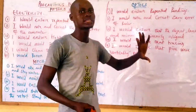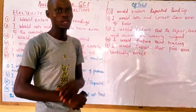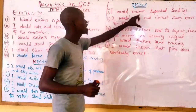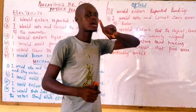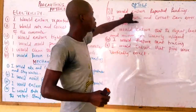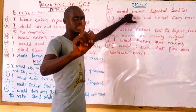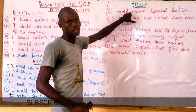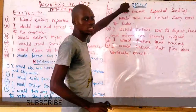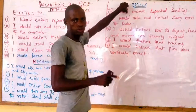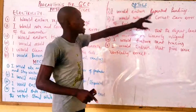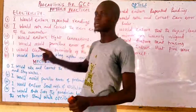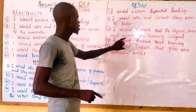Now for optics — the first precaution is: I would ensure repeated readings. But remember, only write this precaution if you are taking two different readings. If you are only taking one single reading, avoid this precaution, because if you write it incorrectly marks will be deducted. The second precaution is: I would note and correct the zero error of the ruler. In fact, in every physics experiment you should note this.